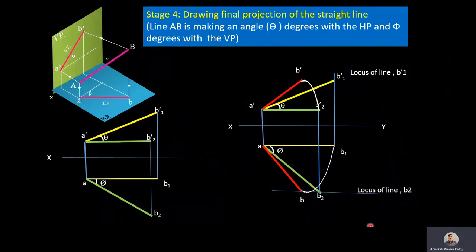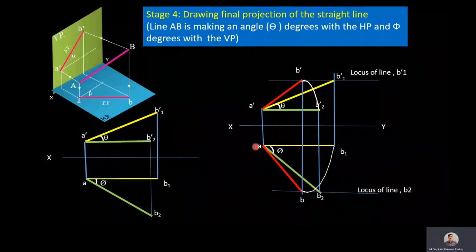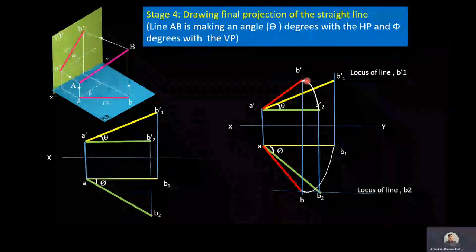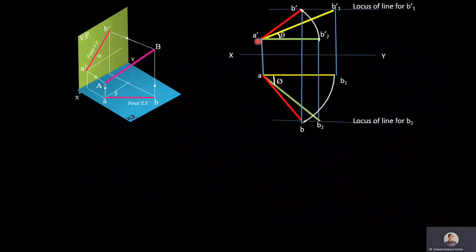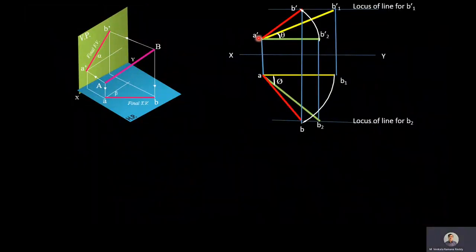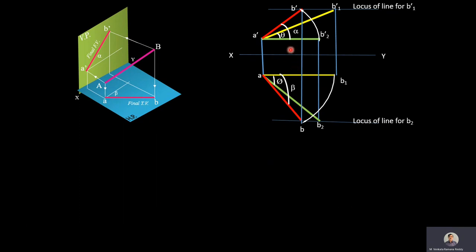Join B and B'. Here, AA' and BB' are parallel to each other and are called end projectors. The final front view A'B' makes angle alpha with HP. The final top view AB makes angle beta with VP. Comparing: A'B1' and AB2 are the true lengths; A'B2' and AB1 are the initial reduced views; A'B' and AB (shown darker) are the final projections.